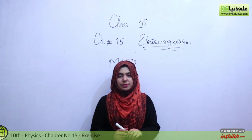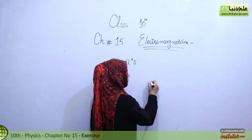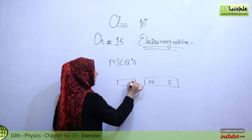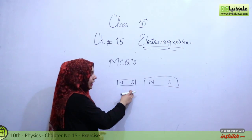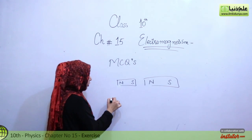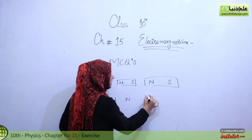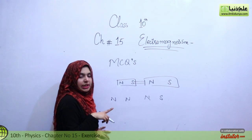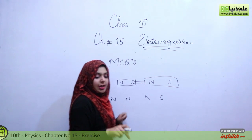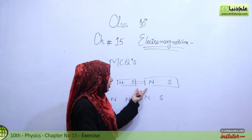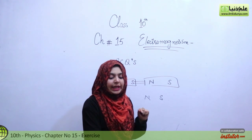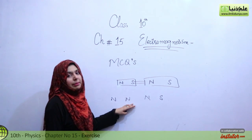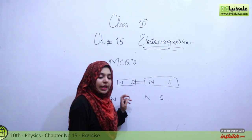So, unlike poles repel — first of all, these are unlike poles. One magnet is north, the other is south and north. If it is north and north then these are like poles; if it is north and south then these are unlike poles. Unlike poles attract each other, they do not repel. So option A is not correct. For option B, like poles attract — if both are north, they will not attract each other, they will repel. So option B is also not correct.